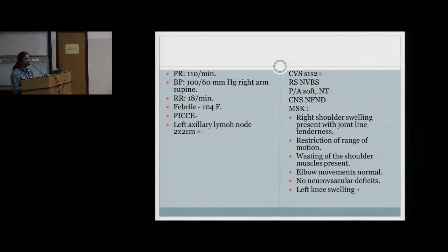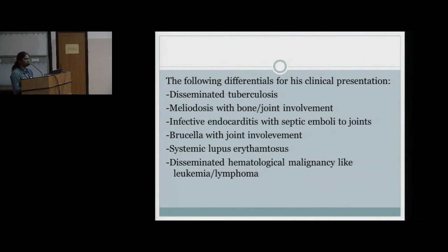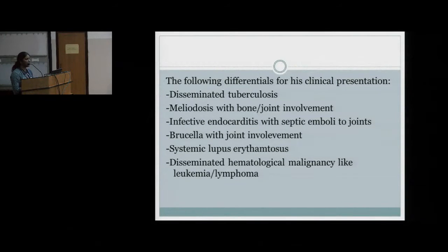He also had left knee swelling noticed during examination of the other joints; however, the patient had no complaints related to other joints. The differentials considered at the point of presentation were disseminated tuberculosis given the fever going on for the past one month and oligoarthritis involving two joints, or melioidosis with bone and joint involvement.